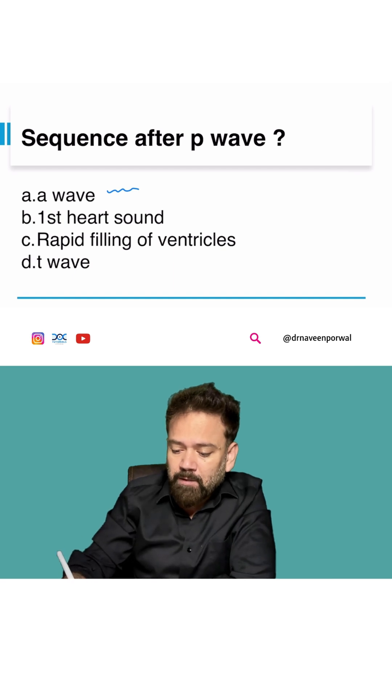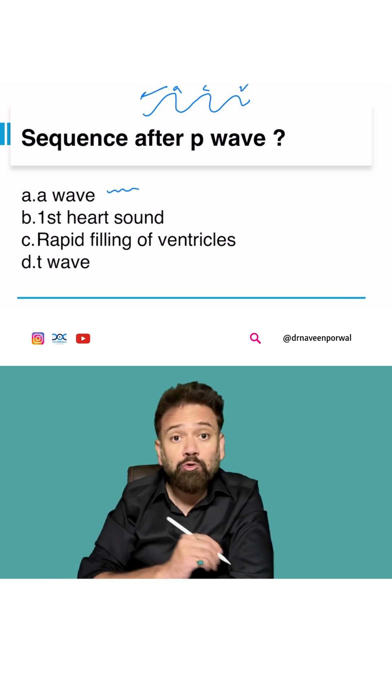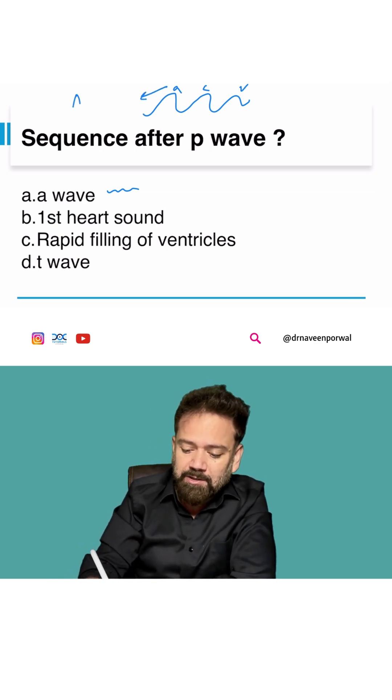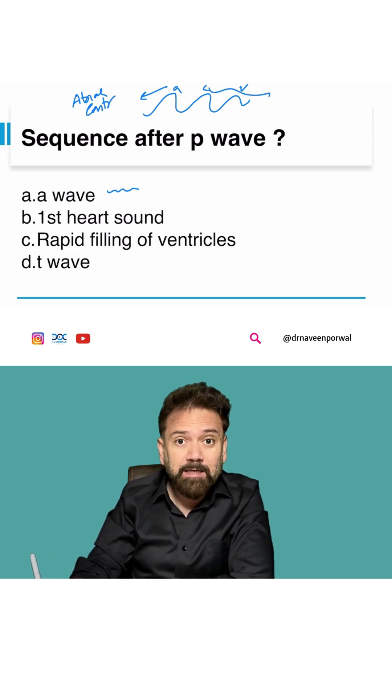A wave in the jugular venous wave. If you remember, jugular venous wave has A wave, C wave, V wave. A wave is due to atrial contraction. C wave is when cusp pulsates in the atria during isovolumetric contraction.